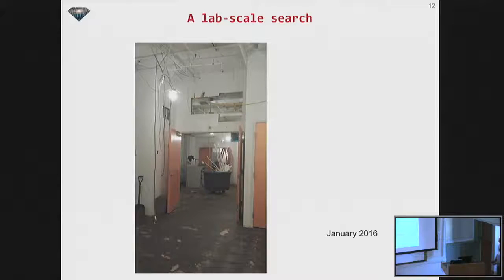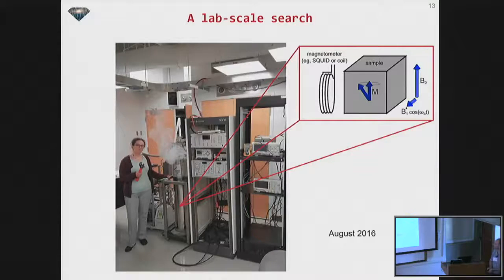Right. So this is a lab scale search. This is a picture of our lab about six, seven months ago, and this is a month or two ago. So basically this gives you the general idea of how large this experiment is. Here is my sample with the magnetometer, and everything will sit in a cryostat, and Denise is the graduate student who's working on this experiment over here, and she's cooling down this cryostat, filling it with liquid helium. So this gives you the scale of this experiment. It's a laboratory scale experiment.